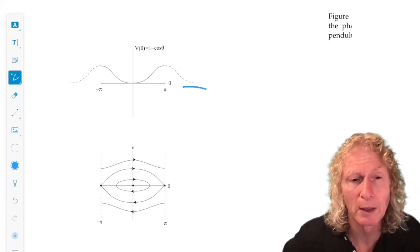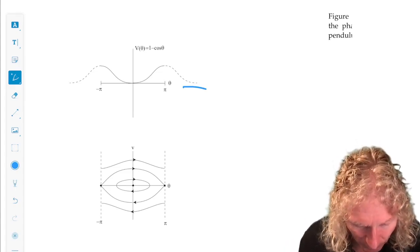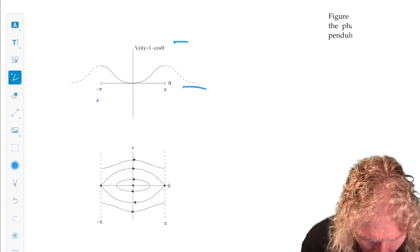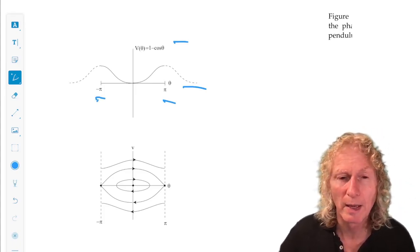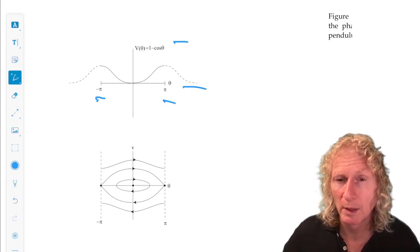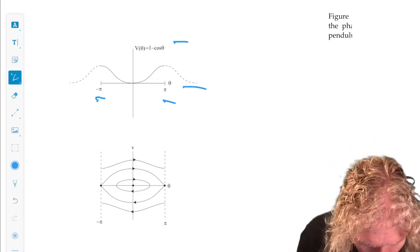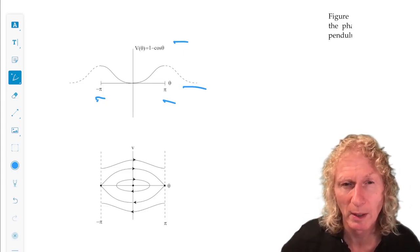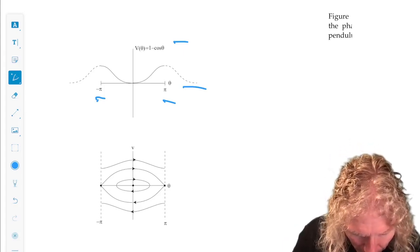We plot theta, the position variable, along the horizontal axis and the potential on the vertical axis. Minus pi and pi happen to be the same point. The mass is rotating around on a circle, so pi is straight up and minus pi is straight up. This is what the potential energy looks like between minus pi and pi.